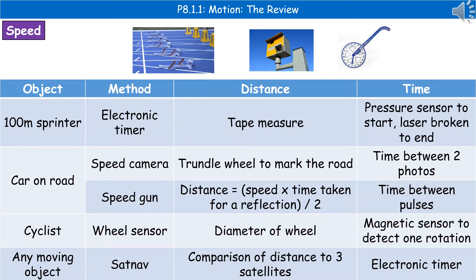If we're talking about any moving object at all, we can use a sat nav because that uses three satellites to compare the distance to those three satellites from the object, along with an electronic timer. Just think carefully about the scenario they give you — how would be best to work out the distance and how would be best to work out the time.